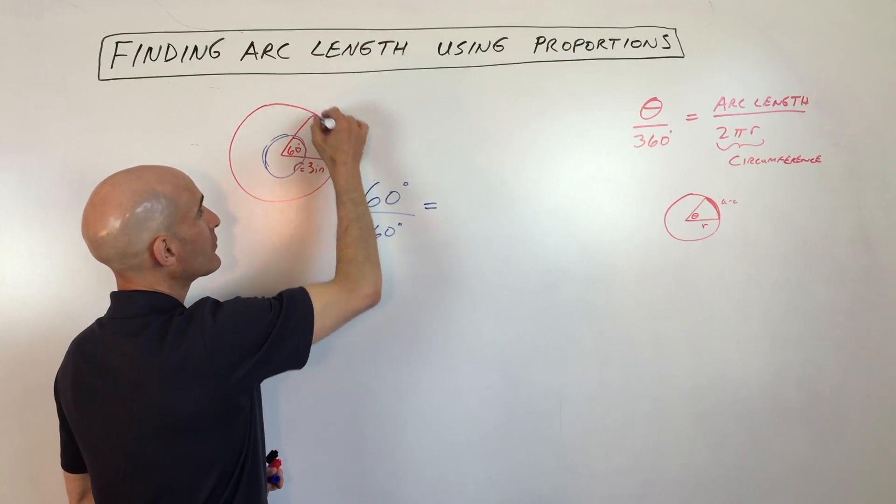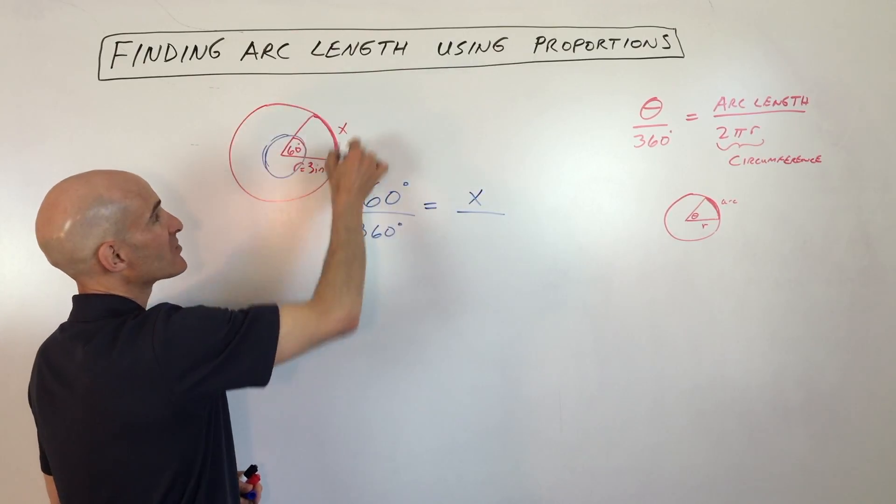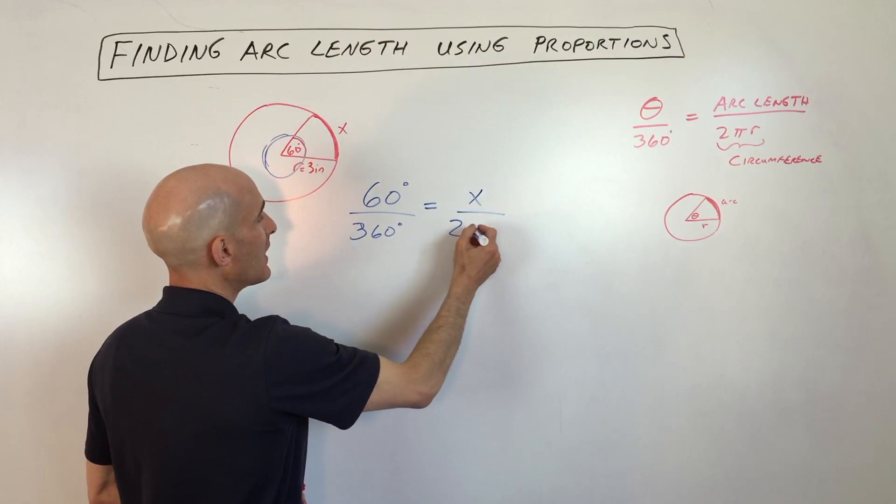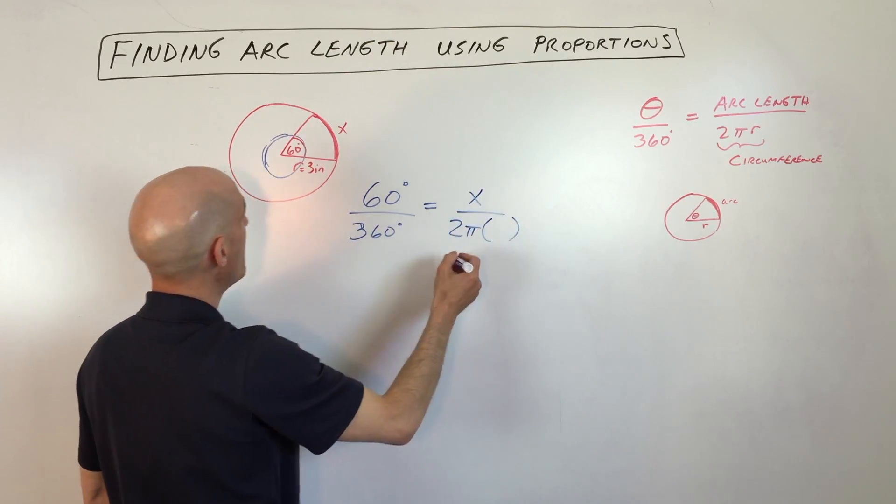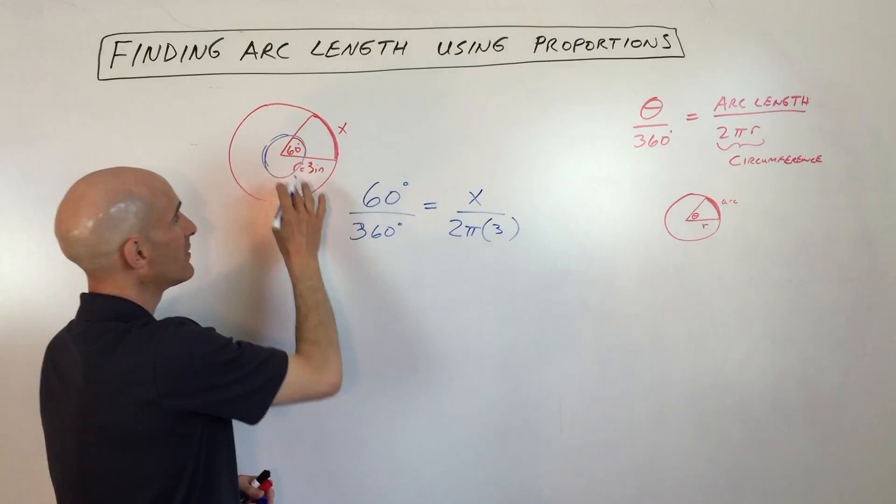as the arc length, x, is to the entire circumference, the distance all the way around. The circumference formula is 2πr, so that's 2π times the radius 3.